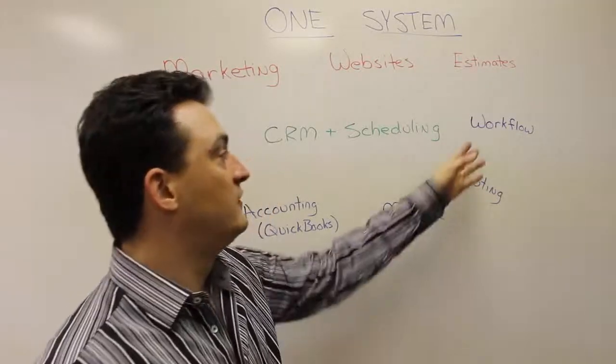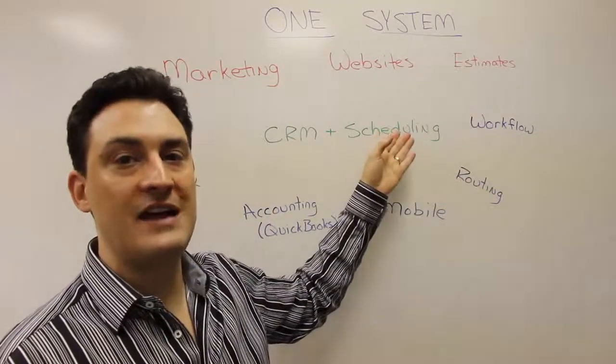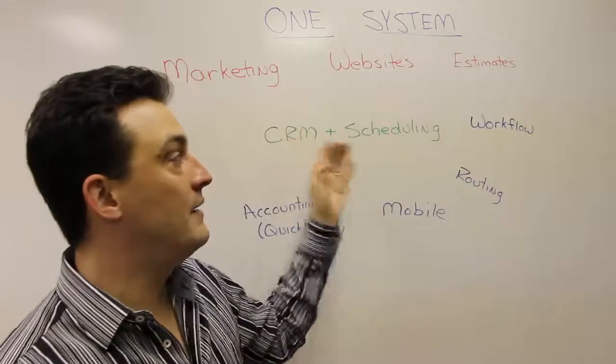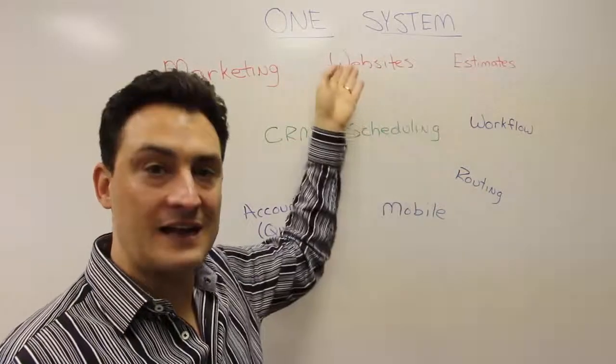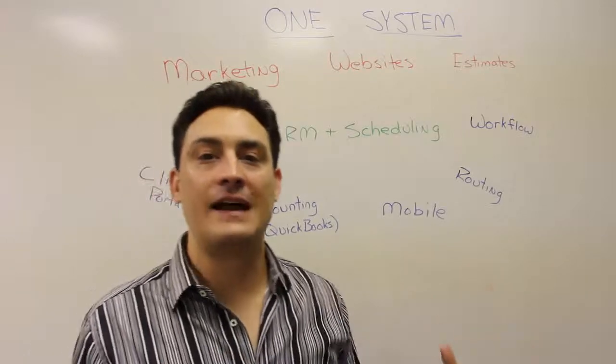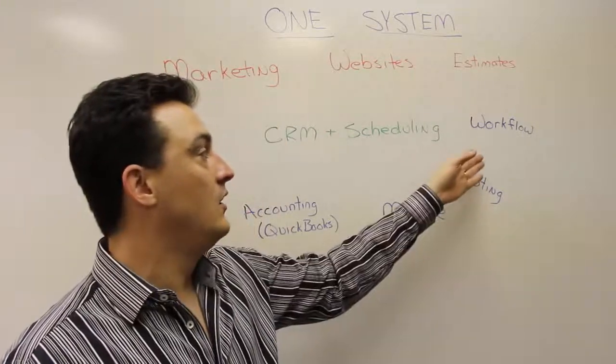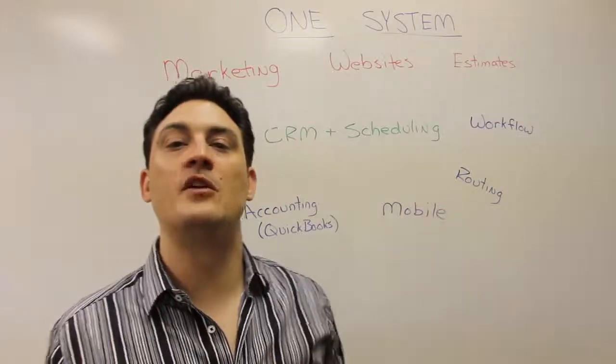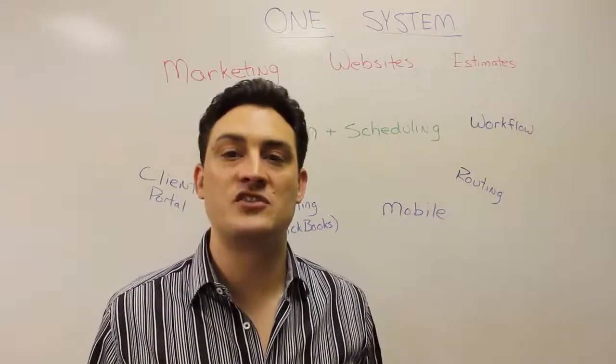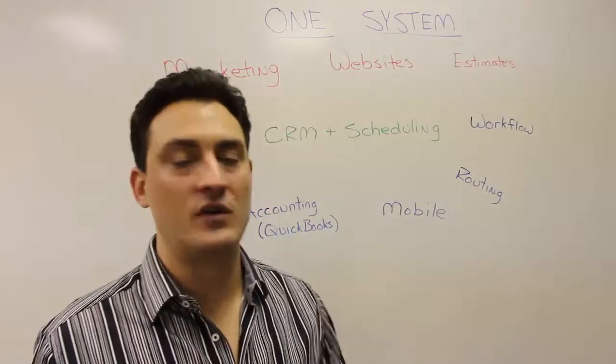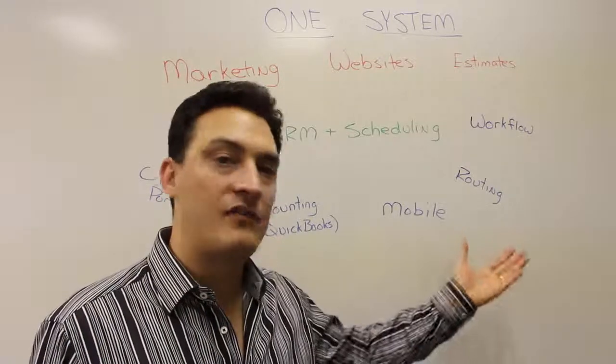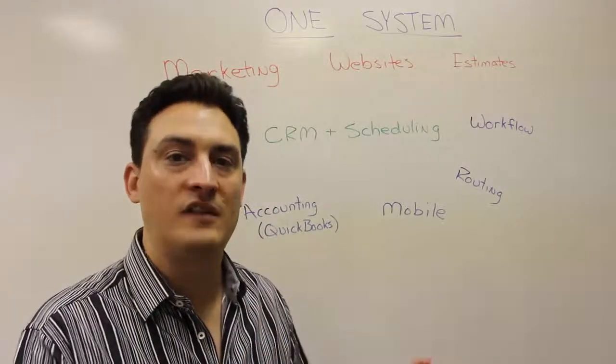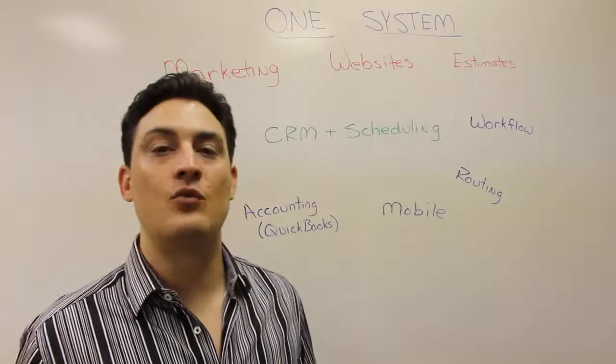Workflow says, when this thing happens, do this. When this thing happens, tell this person to do this. Workflow is automation. Workflow is autopilot. So this workflow is tied into scheduling, tied into CRM, tied into estimates, tied into websites, tied into the entire system. Now, once you win the business and you schedule the business, what's the most efficient path? What's the most efficient route? That's routing. We're tied into different routing systems. We have our own routing. It's all built into one system.